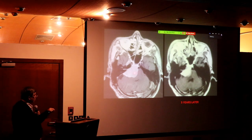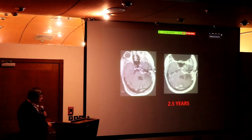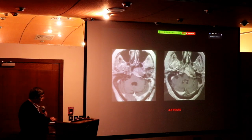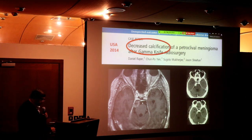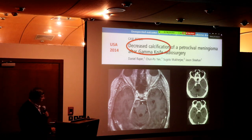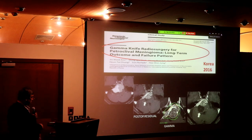They don't use gamma knife because it's better for the patient — they use it because it's good for themselves. Look at this tumor: there is no brainstem visible, it's severely compressed. After five years it's still compressed. They show you pictures but we don't know what the patient is doing. They call it tumor control — but you did nothing. This is Jason Sheehan from Charlottesville — a major neurosurgery center — and still they gave gamma knife despite severe brainstem compression.